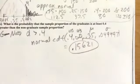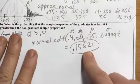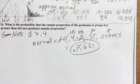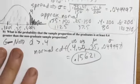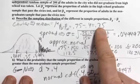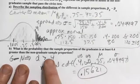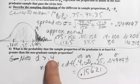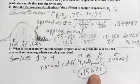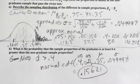So the answer is about 0.1562. This is above 0.05, so it's not that unusual. Assuming the true difference is 0.35, the probability of getting a sample difference of 0.4 or more happens about 15.6% of the time — so it's a plausible value.